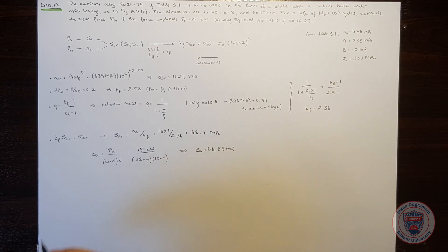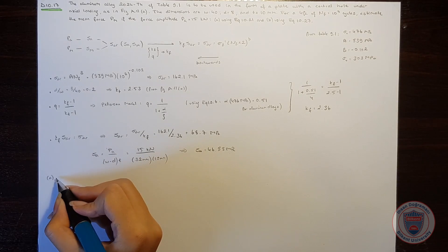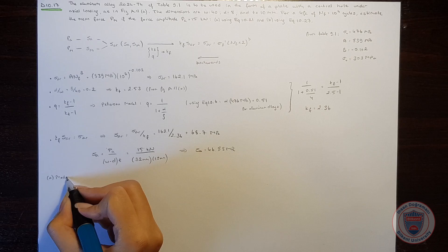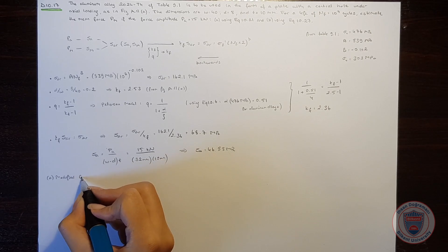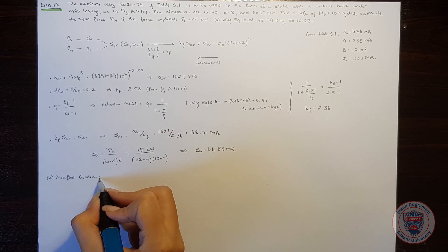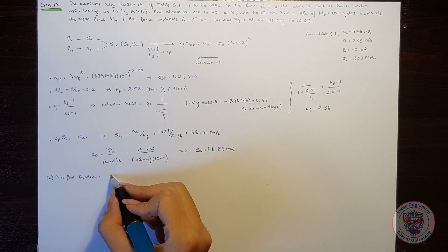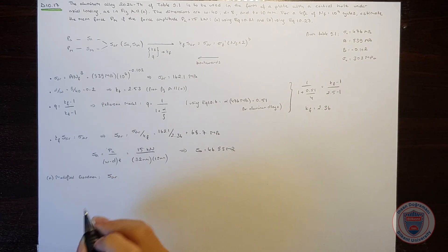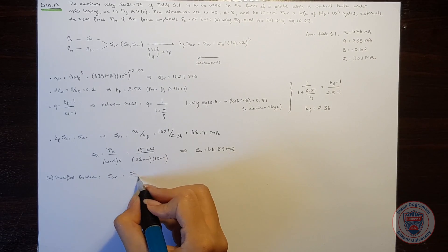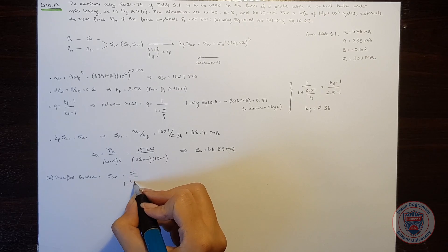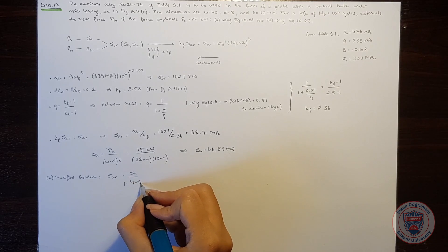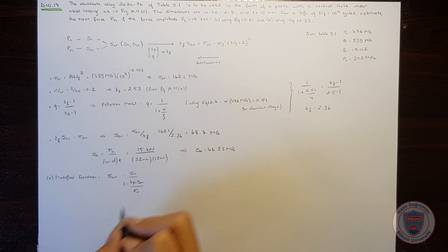Now we can move to part A. Modified Goodman model tells us that SAR is equal to SA over 1 minus KFm times SM over the ultimate tensile strength.